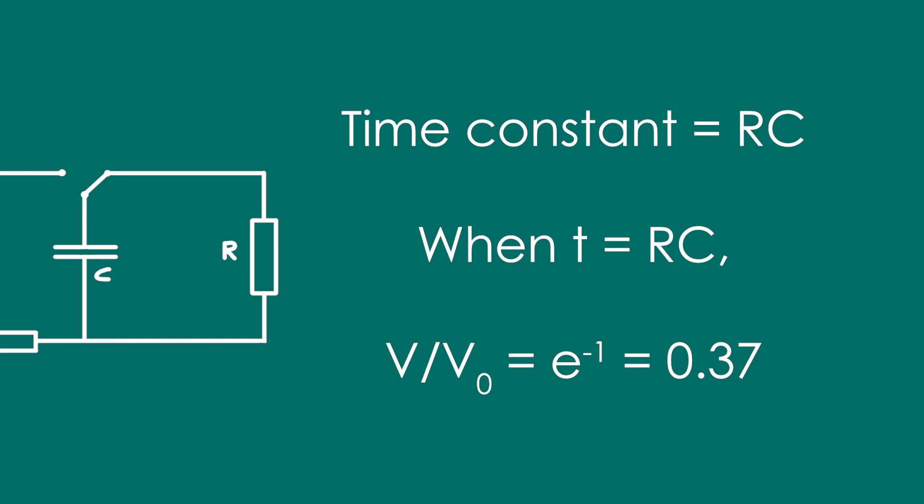we end up with e to the minus RC over RC. So we end up with e to the minus one. That gives us 0.37. That's where 37% comes from.